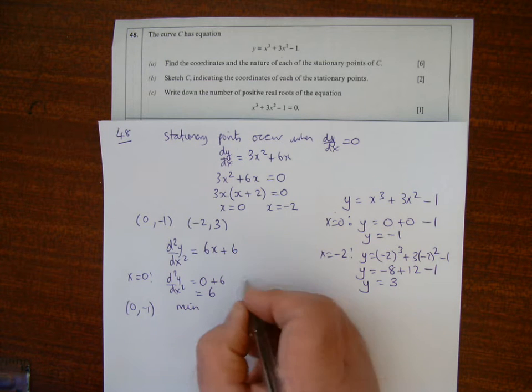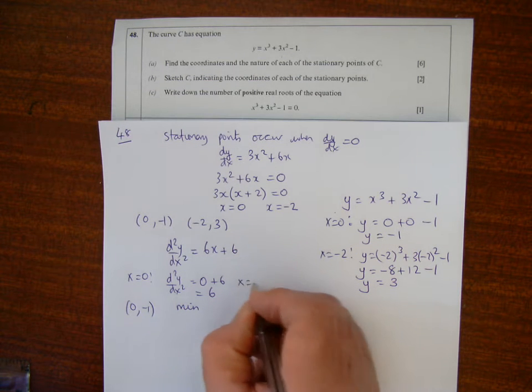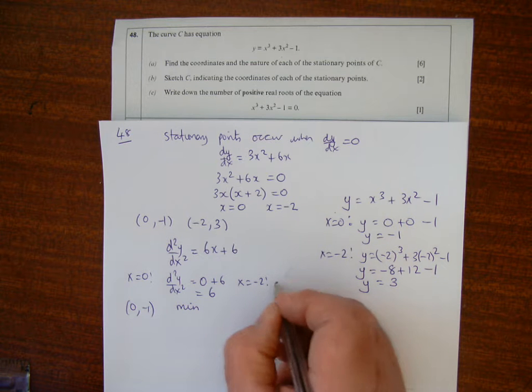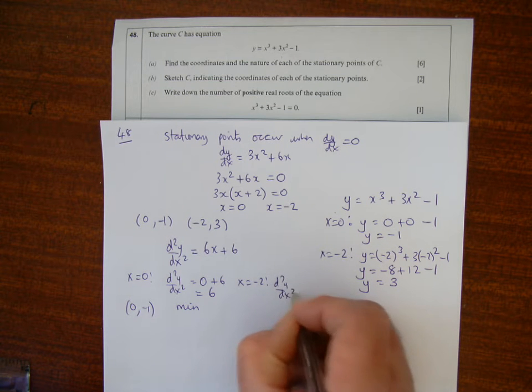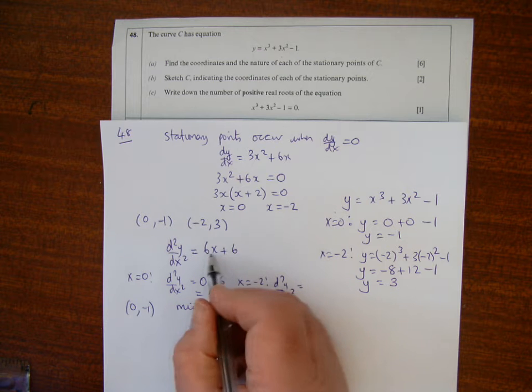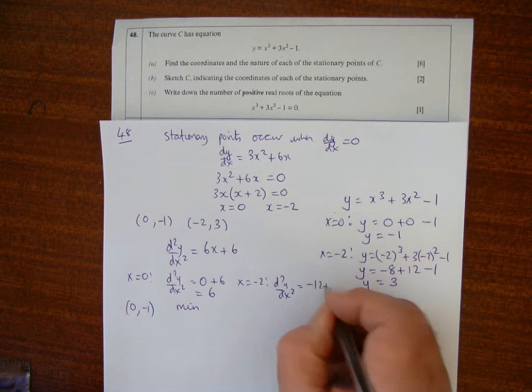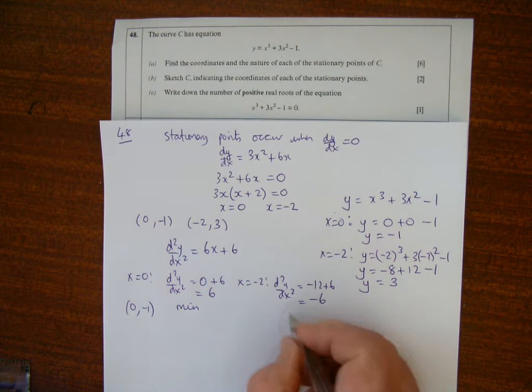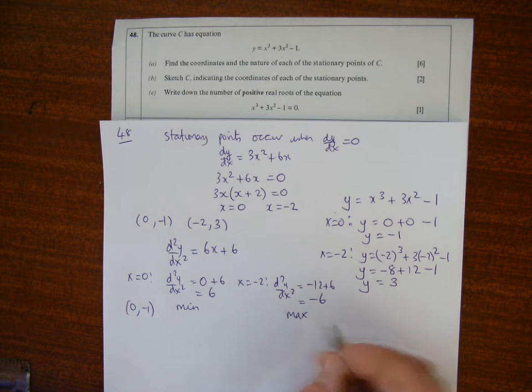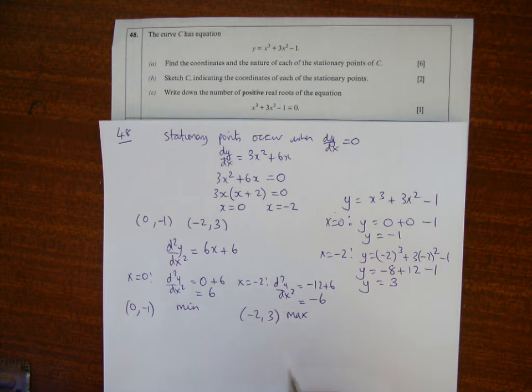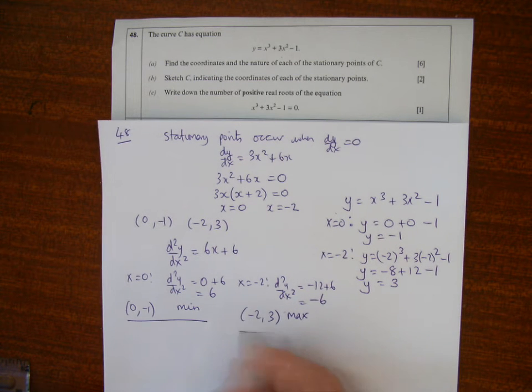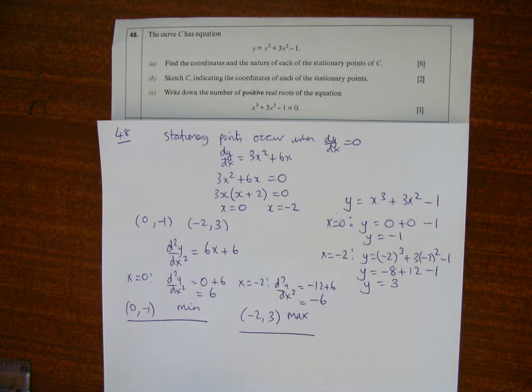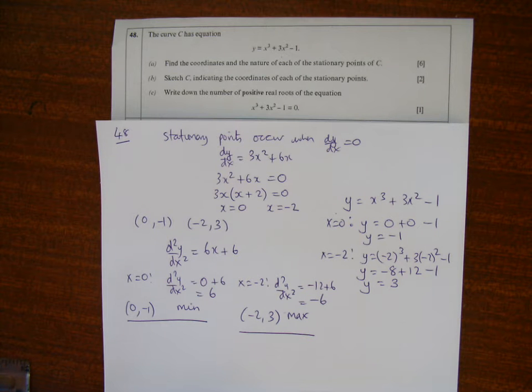If x = -2, the second derivative is 6(-2) + 6 = -12 + 6 = -6. Because it's negative, that's a maximum at (-2, 3). So there are the two stationary points and their nature.